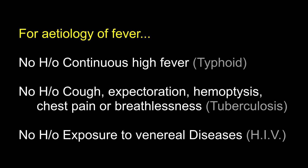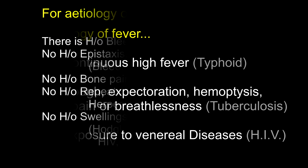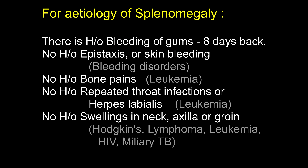No history of exposure to venereal diseases. Regarding etiology of splenomegaly, there is history of bleeding of gums 8 days back. What are the causes of bleeding gums? Gingivitis and bad dental hygiene, scurvy and all bleeding disorders like haemophilia, leukemias, idiopathic thrombocytopenic purpura and patients on anticoagulant drugs.